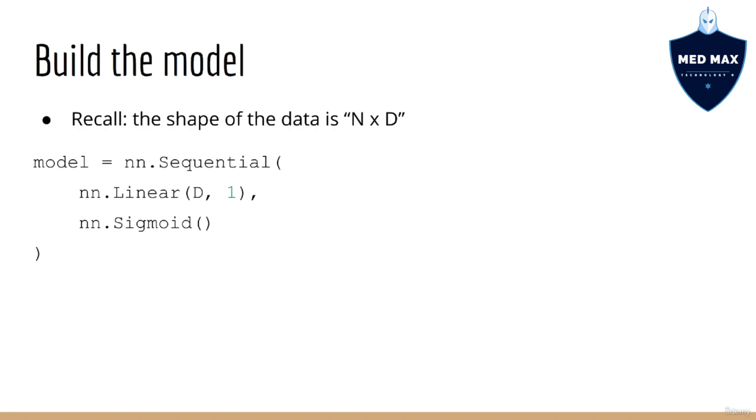There's one detail here that I want you to notice, and this is that when we create the linear layer, the input size is D while the output size is 1. As you recall, our data matrix is of shape N by D, where N is the number of samples and D is the number of features. So we'll have one input for each feature column in the dataset. In addition, we have one output, which represents the probability that the output should be classified as a 1.